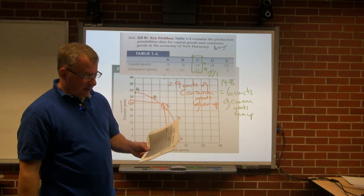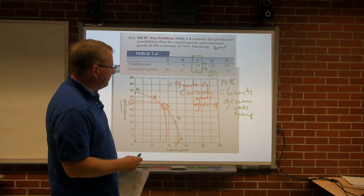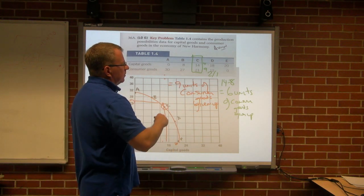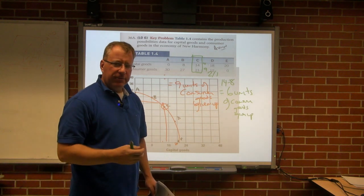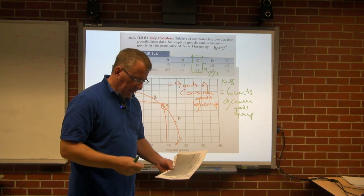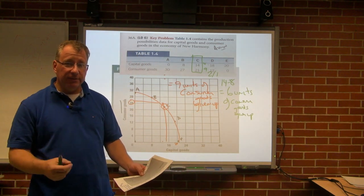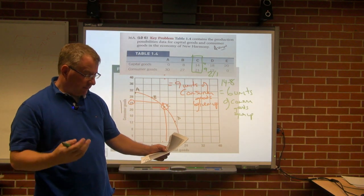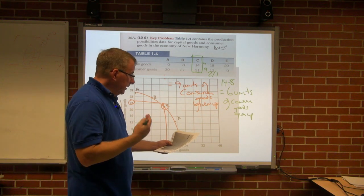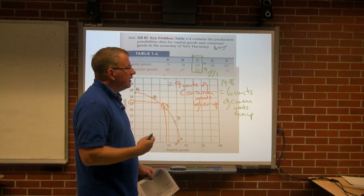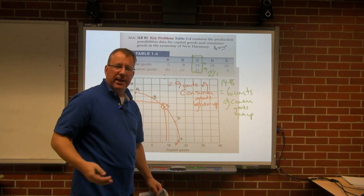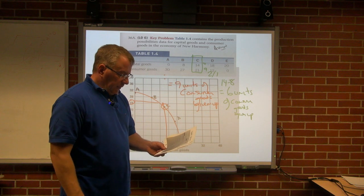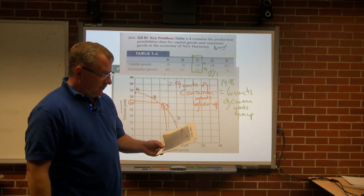Part H: what is illustrated by answers F and G? When we looked at F and G, we had a 1-to-1 relationship in F and a 2-to-1 relationship in G. That illustrates the concept of increasing costs. The law of increasing costs says that as our economy produces more of one thing, we have to give up increasingly more of something else in order to allow that to happen.